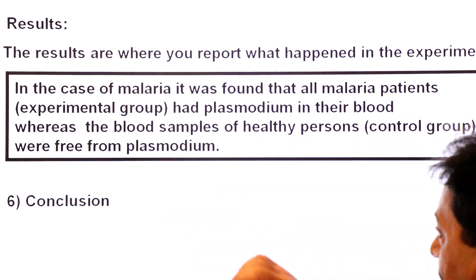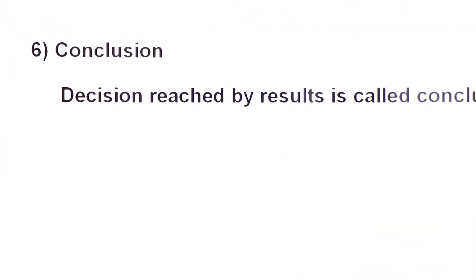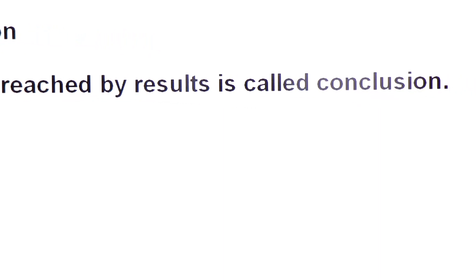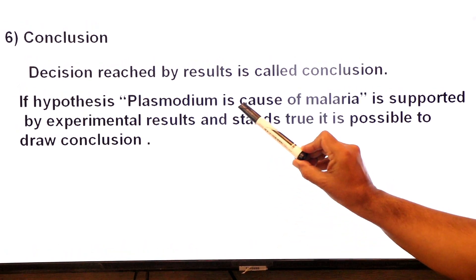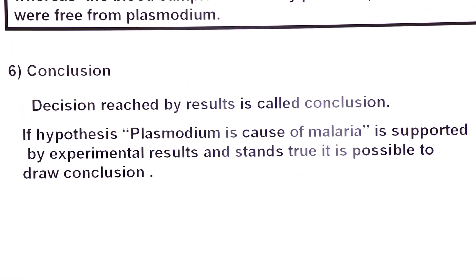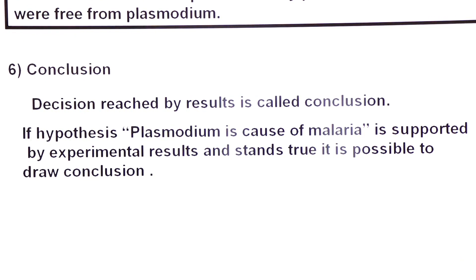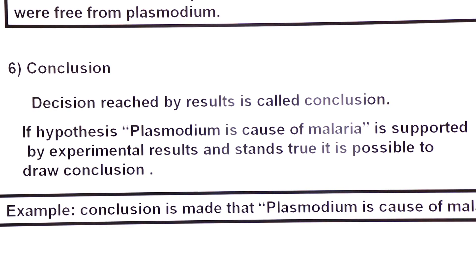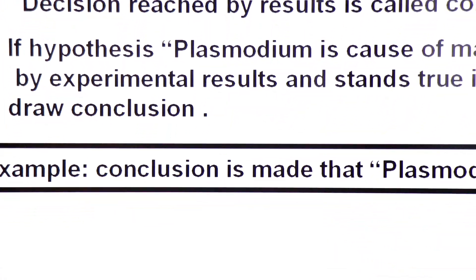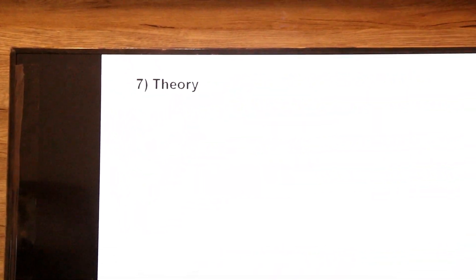From the results you draw a conclusion. Step number six: a conclusion is the decision reached by results. If the hypothesis 'Plasmodium is the cause of malaria' is supported by experimental results and stands true, it is possible to draw a conclusion. The conclusion drawn is that plasmodium is the cause of malaria.